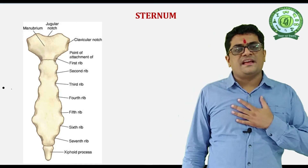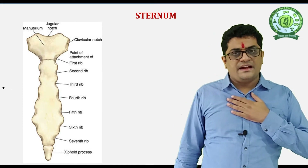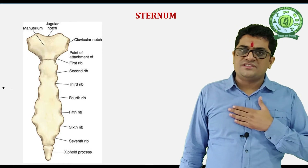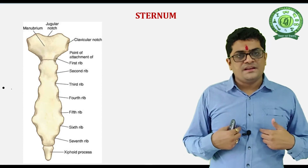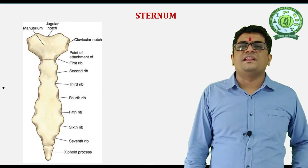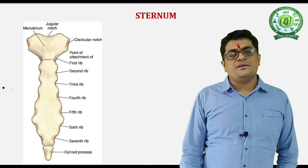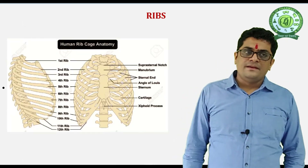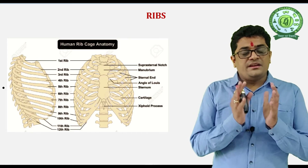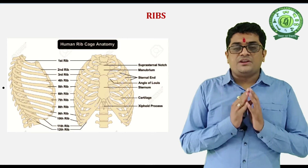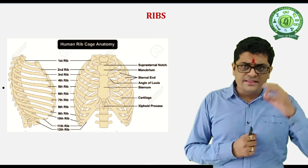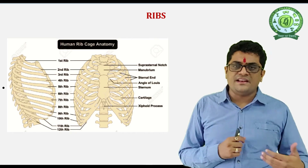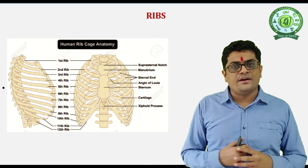An important part of the axial skeleton is the sternum, present at the anterior and ventral part of the thorax or chest. The sternum is associated with the ribs and is also attached to the clavicle bone. The lowermost part of the sternum is known as the xiphoid process and the upper head part is known as the manubrium. The rib cage is formed with the help of 12 pairs of ribs. The ribs are bicephalic — attached anteriorly with the sternum and posteriorly with the vertebral column.